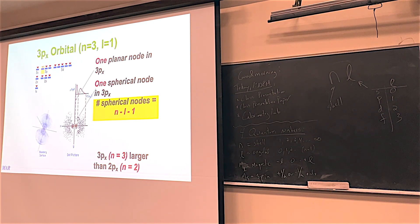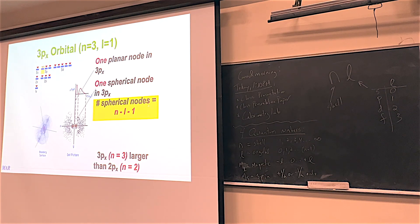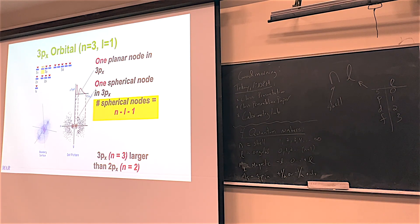So a week ago we started looking at S orbitals, which are the first ones. S orbitals are basically just big spheres. P orbitals are basically figure-8s. Now, one thing to think about here is that there are nodes in these orbitals. There are two types of nodes. A node is a place where there's no electron density. Electrons here are behaving more like waves — they're not particles, which still blows my mind when I think about it.